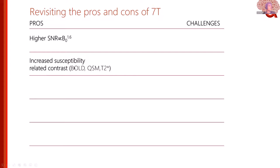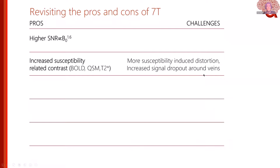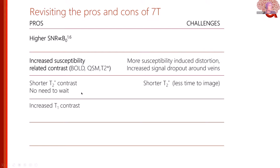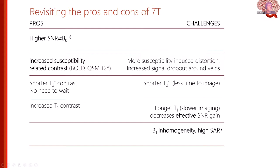To summarize the pros and cons: you do get high SNR that allows great images, and increased susceptibility contrast, which is good for T2-star contrast but also causes more geometric distortion with EPI readouts and signal dropout near air-tissue interfaces. Veins tend to dominate some images. Shorter T2* means less time to acquire. Increased T1 means slower imaging, reducing the effective SNR gain. And there is significantly higher SAR — you tend to deposit a lot of energy in subjects.